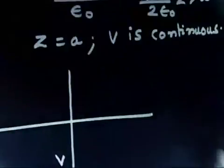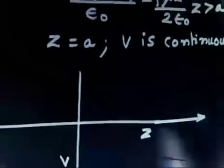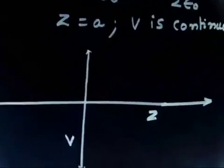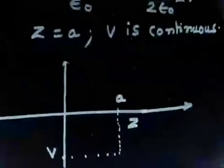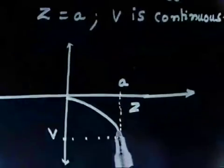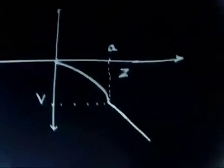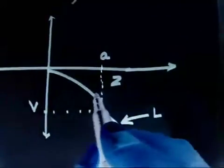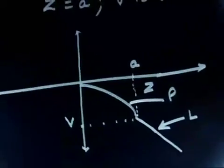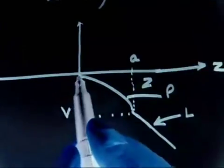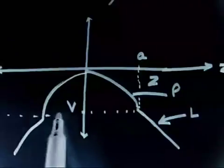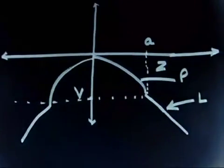If you plot the potential versus z: from 0 to A it is a downward parabola (since it is negative and parabolic), and beyond A it varies linearly downward. For negative z, the graph is symmetric — you get the same shape on the negative side.